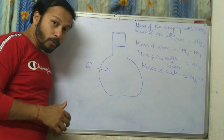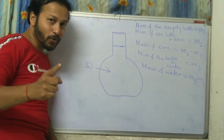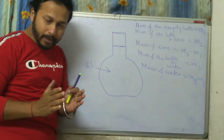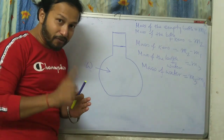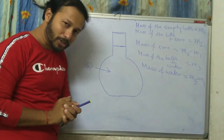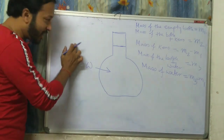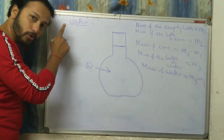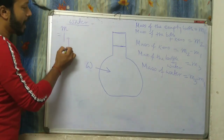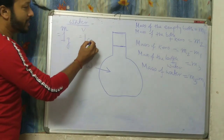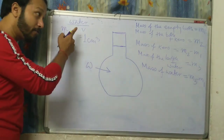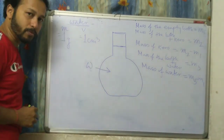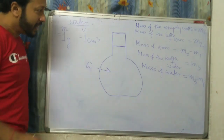We know that for water, 1 gram of water has a volume of 1 centimeter cube — remember this applies only to water, not other liquids. So if mass equals 1 gram then volume equals 1 centimeter cube.